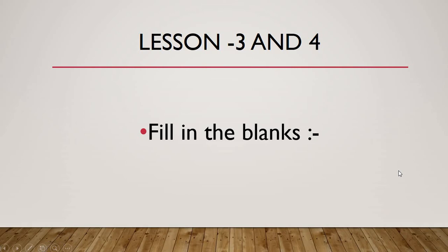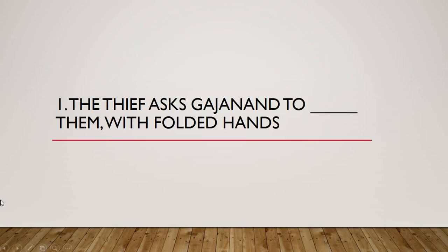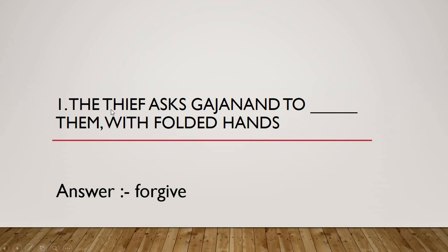Lesson number 3 and 4 — Fill in the blanks. This is the second part of the revision worksheet. Question 1: The thief asks Gajanand to dash them with folded hands. When the thief was caught, what does he ask with folded hands? The correct answer is 'forgive.' The thief asks Gajanand to forgive them with folded hands. If you remember the story, you don't have to memorize the answer — just remember the story of the lesson.